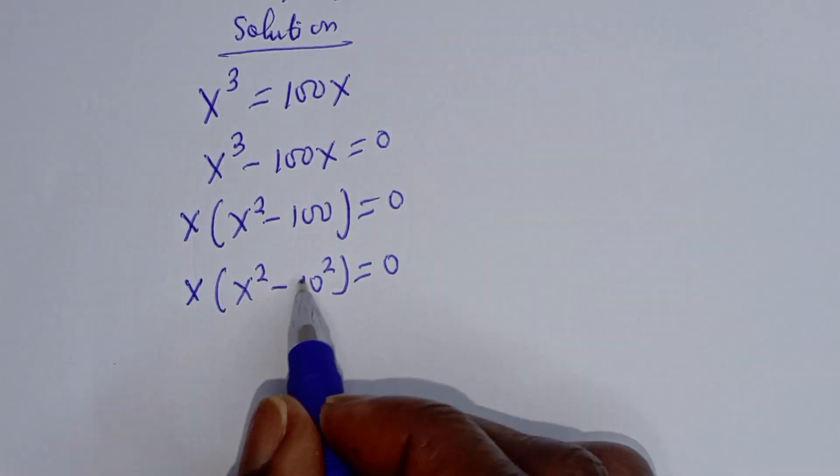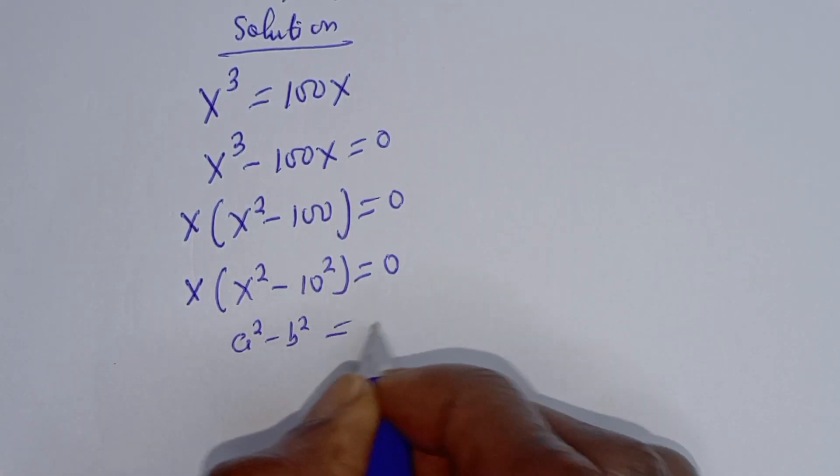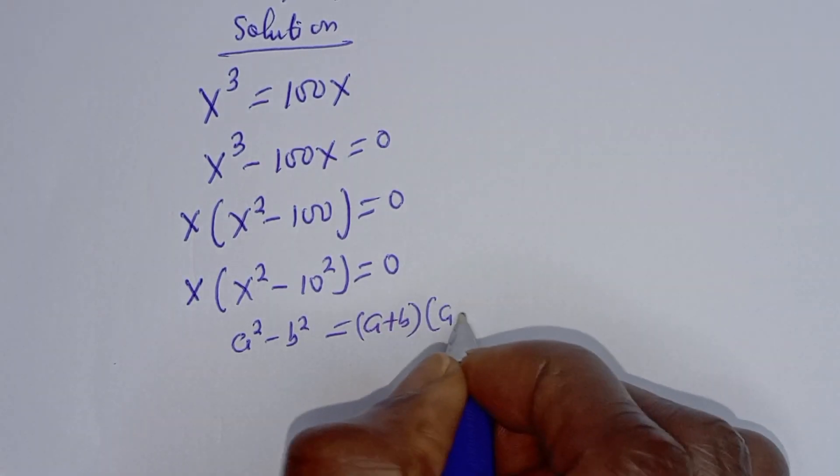Then this is in the form of perfect square. If you have a square minus b square, this is equal to a plus b bracket a minus b.